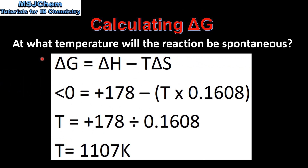Next we will calculate the temperature at which the reaction will be spontaneous. For a spontaneous reaction delta G must be negative, therefore it must be less than zero. So delta G less than zero equals the change in enthalpy minus T times the change in entropy. We can rearrange this equation to get T equals the change in enthalpy divided by the change in entropy, and that gives us a temperature of 1107 Kelvin at which the reaction will be spontaneous.